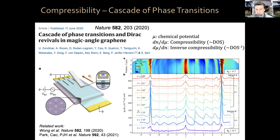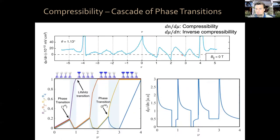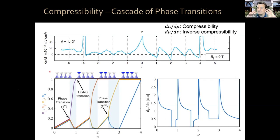If you measure the inverse compressibility as a function of filling factor, you see sharp features near four electrons and four holes per moiré unit cell, and at each integer in between there is a sawtooth-like behavior — most pronounced for electrons. To zeroth order, what is happening at each of these integers is a phase transition — we call this the cascade of phase transitions — where the system is flavor-polarizing near each integer.